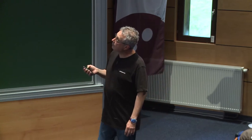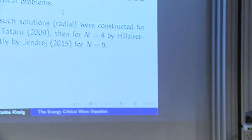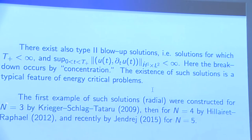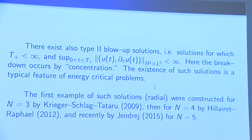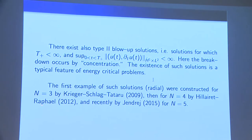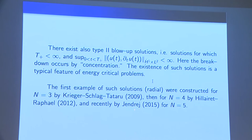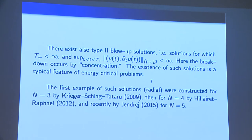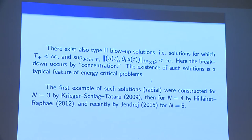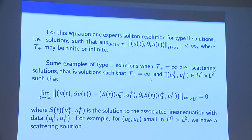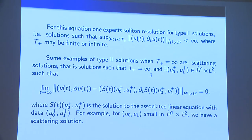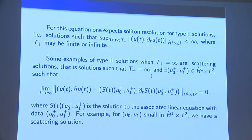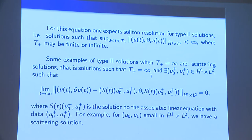The first examples of type two solutions were constructed by Krieger, Schlag, and Tataru in the three-dimensional case, then in the four-dimensional case by Hillairet and Raphaël, and recently by Jendrej in the five-dimensional case — and I think also in the six-dimensional case. Should we expect soliton resolution for this equation?